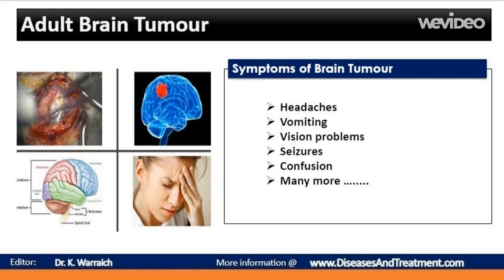Other common symptoms include: clumsiness, memory loss, confusion, difficulty writing or reading, changes in the ability to hear, taste, or smell, decreased alertness which may include drowsiness and loss of consciousness, difficulty swallowing, dizziness or vertigo, eye problems such as drooping eyelids and unequal pupils, uncontrollable movements, hand tremors, loss of balance, loss of bladder or bowel control, numbness or tingling on one side of the body, trouble speaking or understanding what others are saying, changes in mood, personality, emotions, and behavior, difficulty walking, and muscle weakness in the face, arm, or leg.